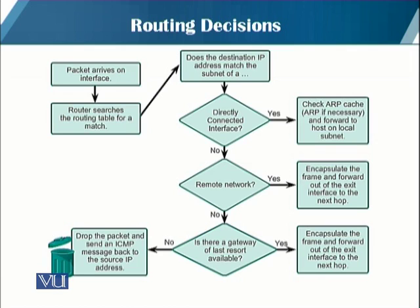The second possibility is that the destination IP address belongs to a remote network. Then the packet is forwarded to another router, because remote networks can only be reached by forwarding packets to another router — this is because routers are used to connect multiple networks. If the destination IP address does not belong to either a connected network or a remote network, the router determines if there is a default gateway, and if found, the packet is forwarded to that default gateway or default route.